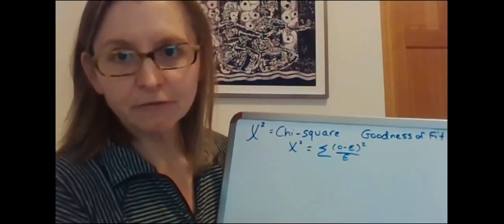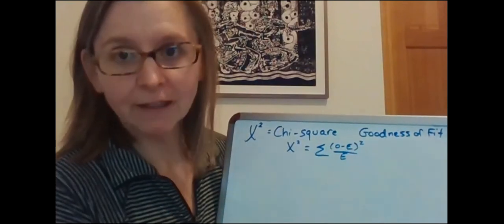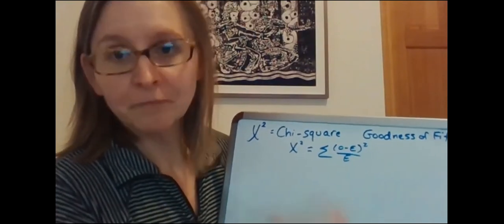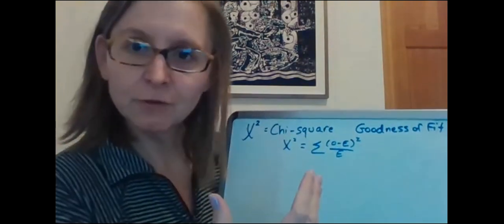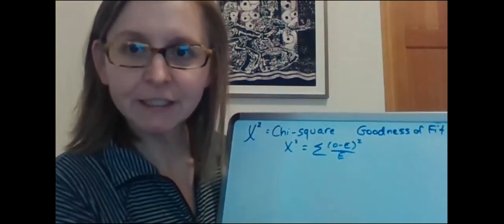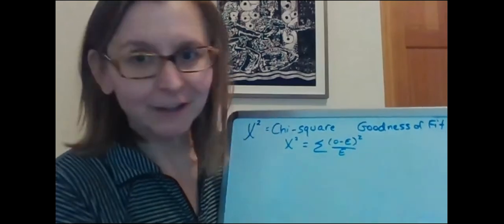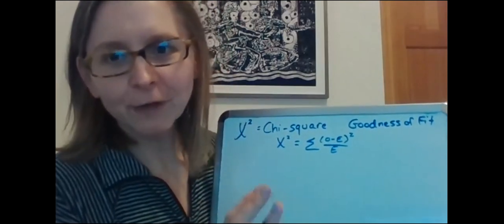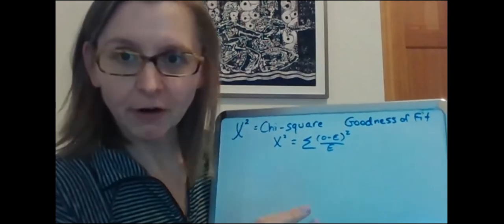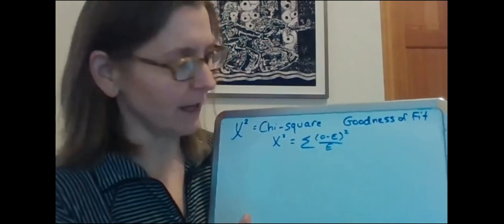So you have a series of observed values and you calculate what your expected values are and you plug them into this equation to get a result. You then use your degrees of freedom. You calculate degrees of freedom and you can look that up on a statistical chart and you can also quite readily do chi-squared analysis in JMP or R as long as your data are set up to do that.